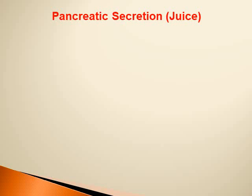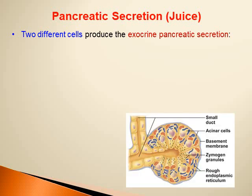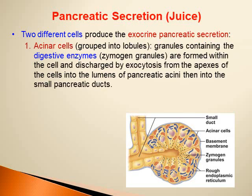Two different types of cells produce the exocrine pancreatic secretion. First, the acinar cells — these are the cells that form the acini, grouped into lobules. They contain zymogen granules, and these granules contain digestive enzymes.